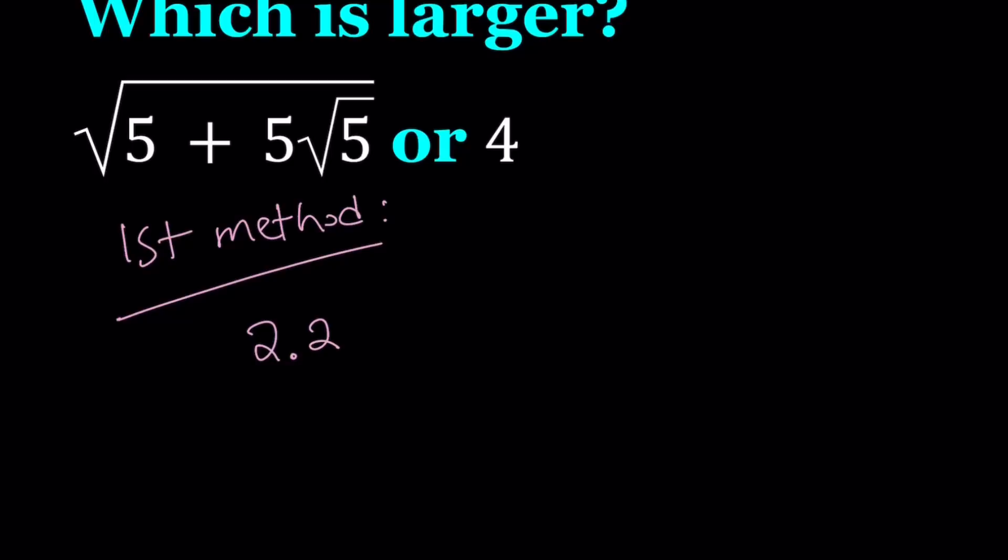I'm going to square 2.2 and you know why I'm doing that? Because I know that 22 squared is 484. Therefore, 2.2 squared is 4.84 and it's pretty close to 5. If you use 2.3, I think it's going to exceed 5. So, I don't want that. I want to be below the 5.